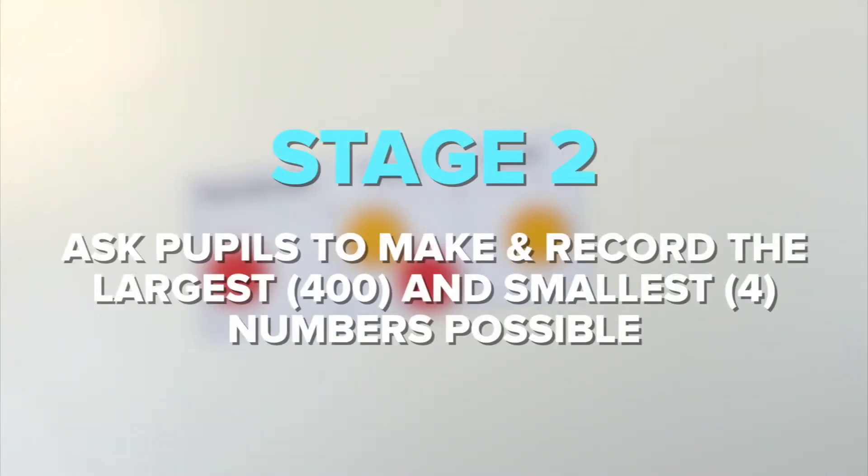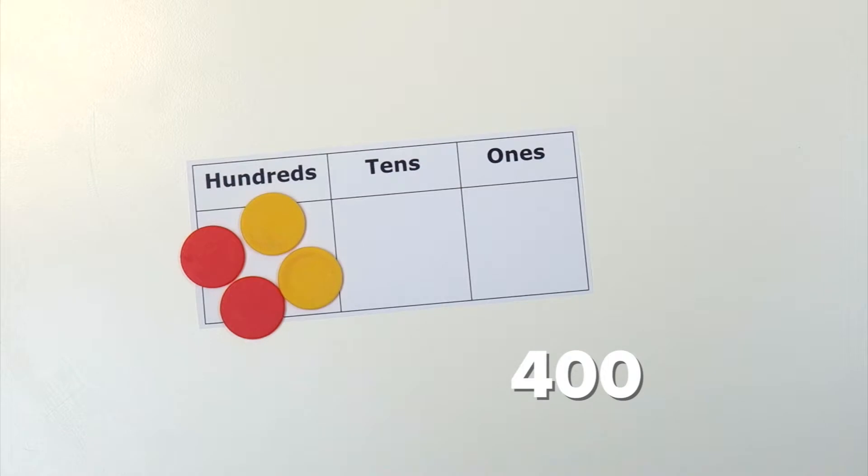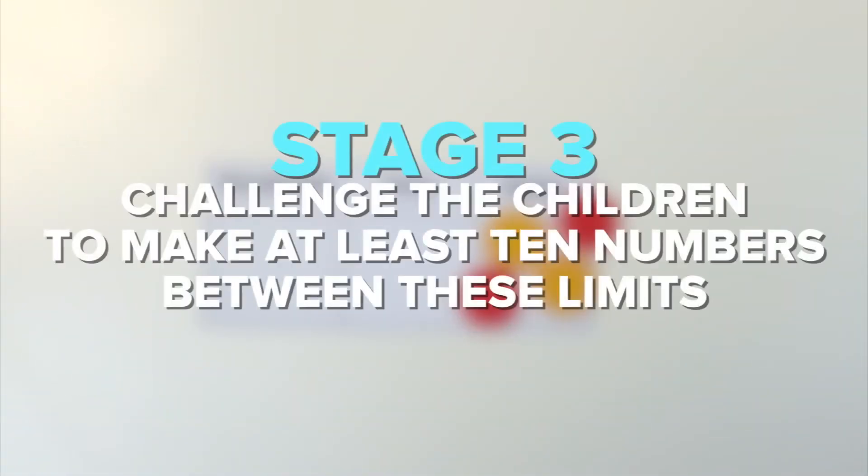Ask pupils to make and record the largest number possible, 400, and the smallest, 4. Challenge the children to make at least 10 numbers between these limits.